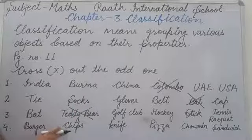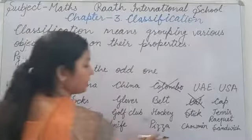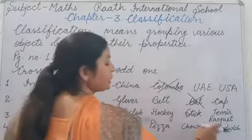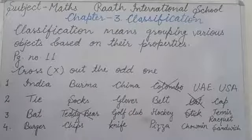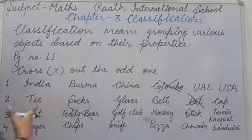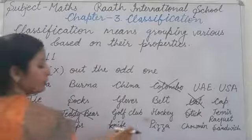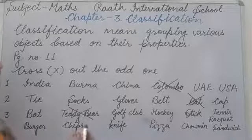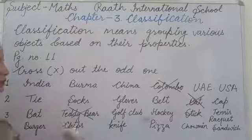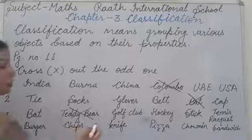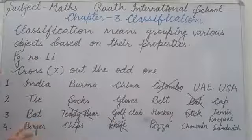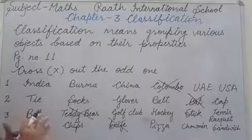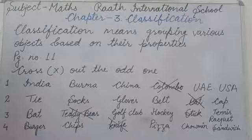Now question four: burger, chips, knife, pizza, chow mein sandwich. Which one is different? You can see burger, chips, pizza, chow mein sandwich — these are all food items that you eat. But knife — what do we use a knife for? For cutting and chopping vegetables, fruits, etc. So knife is different. We cross it. So like this you complete the rest of this page yourself — identify and cross the different one.